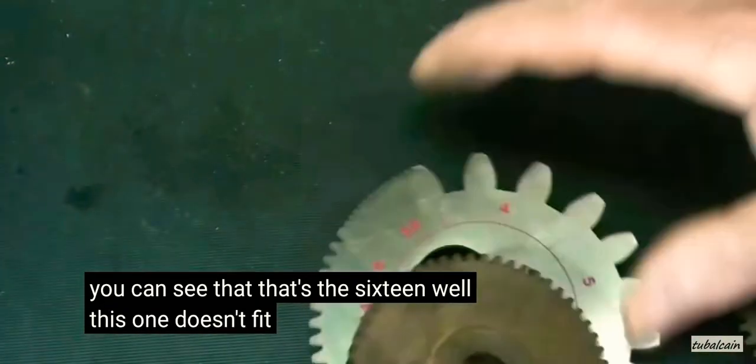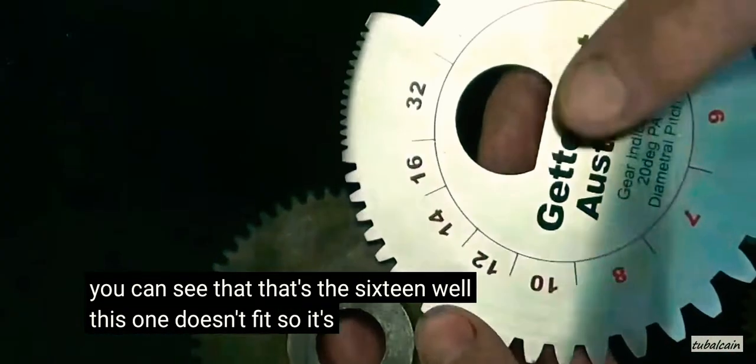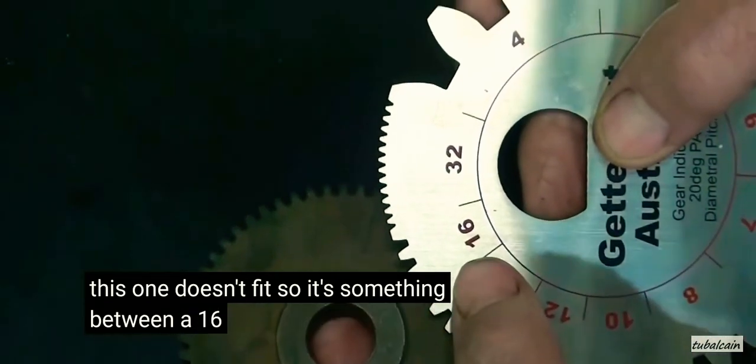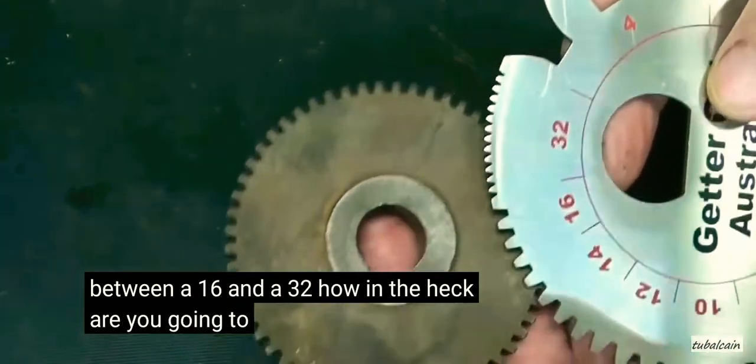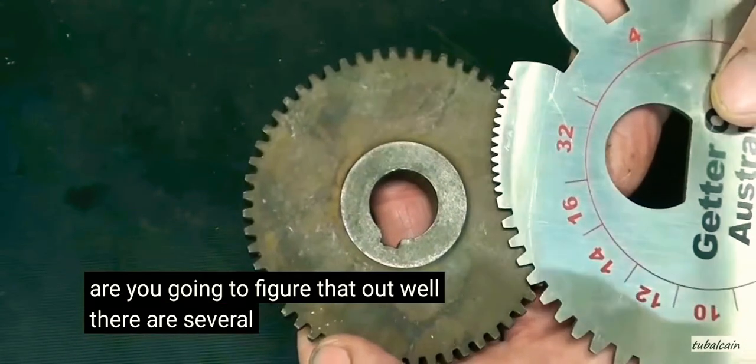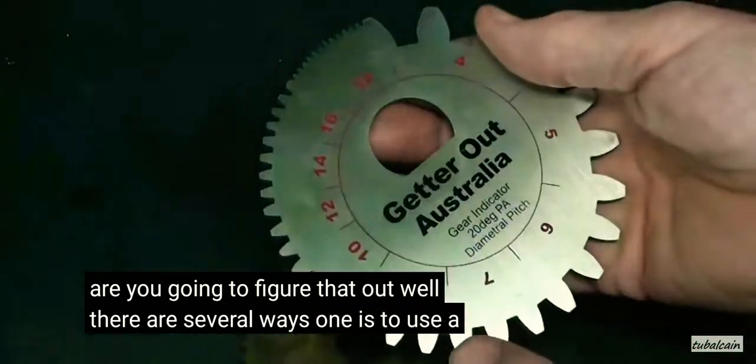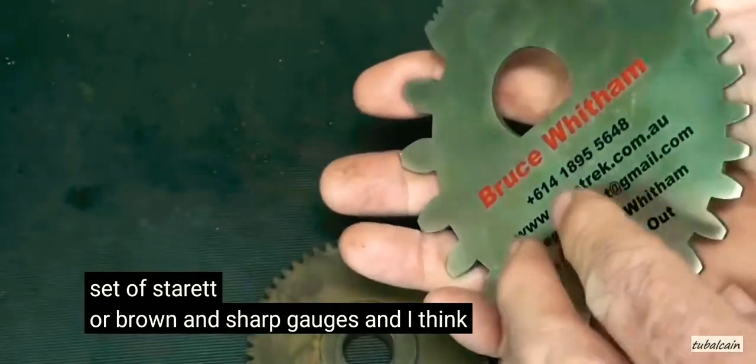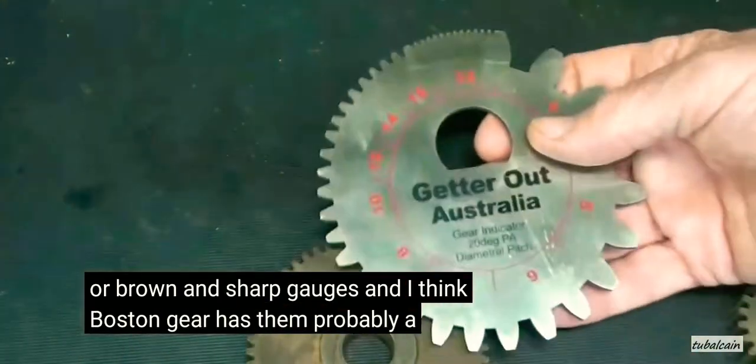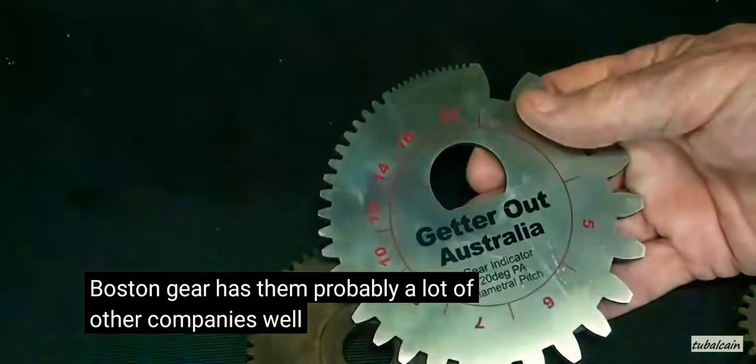Well, this one doesn't fit. So it's something between a 16 and a 32. How in the heck are you going to figure that out? Well, there are several ways. One is to use a set of Steric or Brown and Sharp gauges, and I think Boston Gear has them. Probably a lot of other companies. But here's another way.